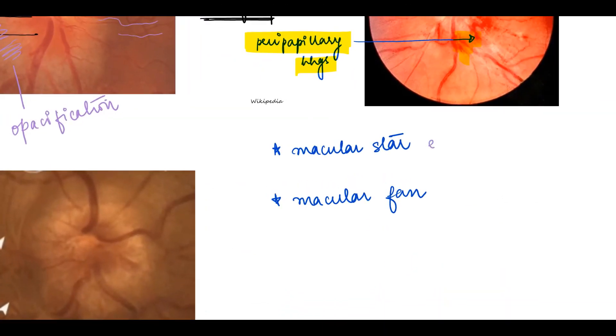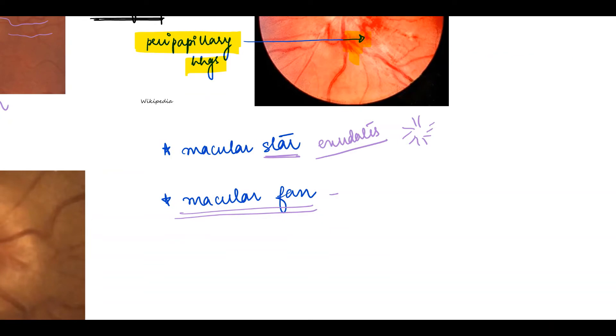Exudates around the macula can give a macular star appearance because they deposit in that fashion. Not to be confused with a macular fan. A macular fan is because of the edema that leads to vesicle formation and these vesicles spread along the nerve fiber layer towards the macula and arrange in the form of a macular fan.